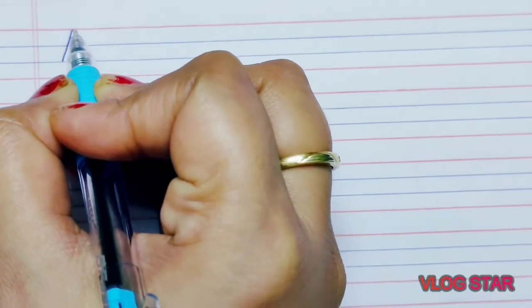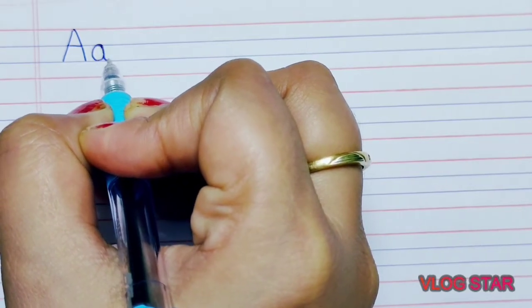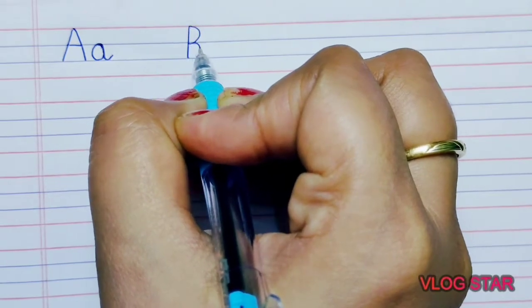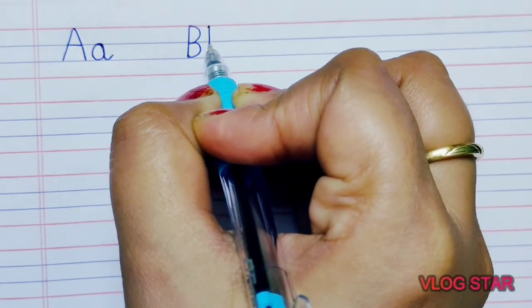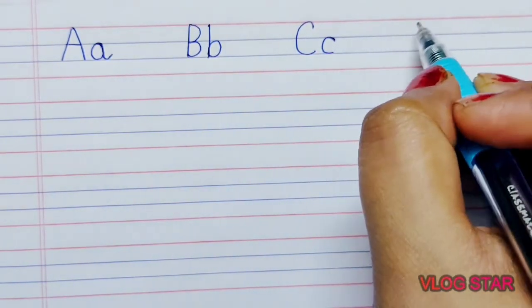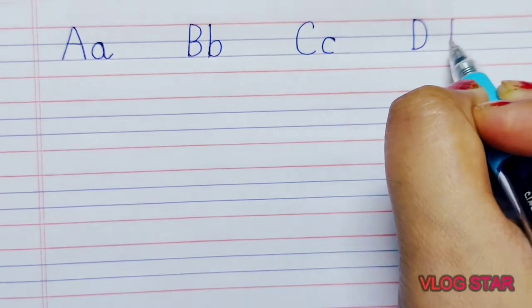A, A for apple. B, B for balloon. C, C for cat. D, D for dog.